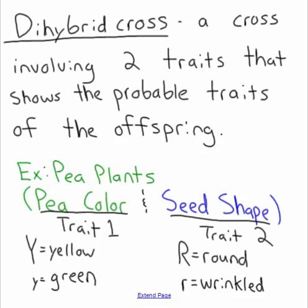In this example we're going to talk about pea plants. We're going to keep talking about pea plant color: big Y equals yellow and little y equals green. But now we're going to introduce seed shape. With pea pods, round is dominant to wrinkled, so big R equals round and little r equals wrinkled. We're dealing with dominant-recessive Mendelian genetics, but crossing two traits instead of one.